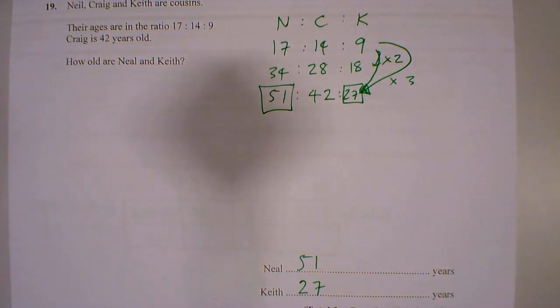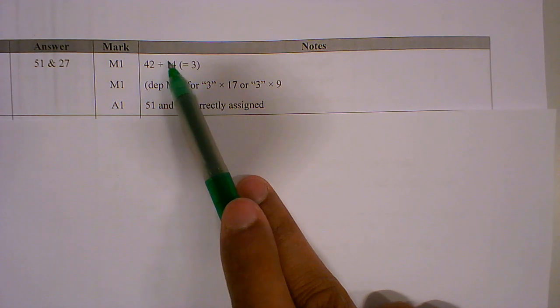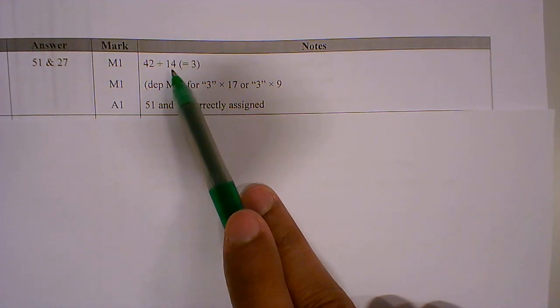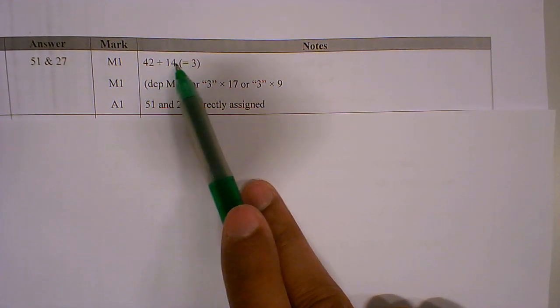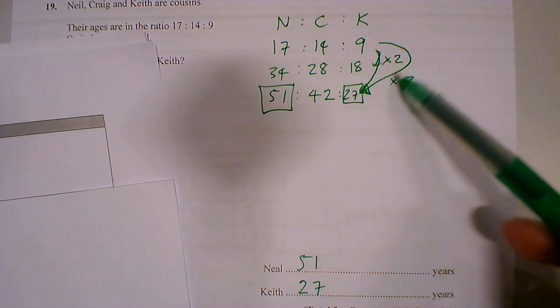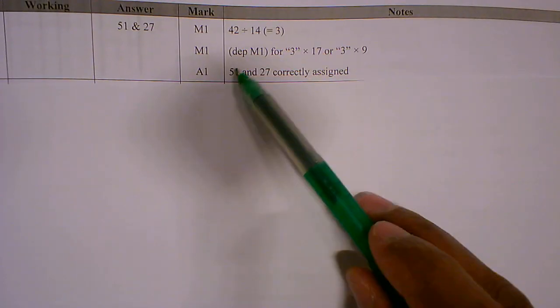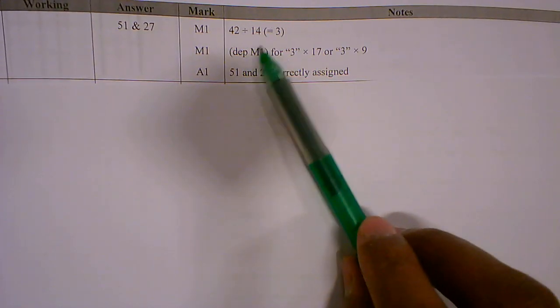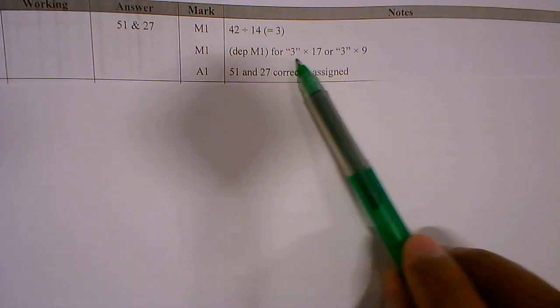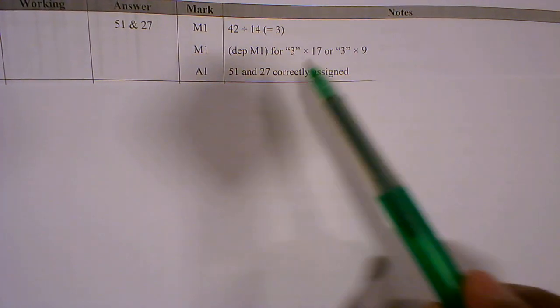And so you can see from the mark scheme, if you did 42 divided by 14 you get 3. I didn't do that but you can kind of see that. And the second mark is based on whatever you've done there, you're multiplying throughout by 3. So 51 and 27.